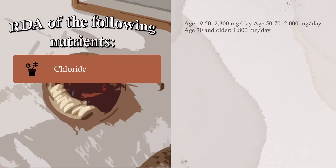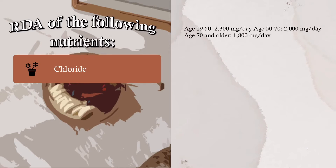Chloride: Age 19 to 50 is 2,300 milligrams per day; age 50 to 70 is 2,000 milligrams per day; age 70 and older is 1,800 milligrams per day.